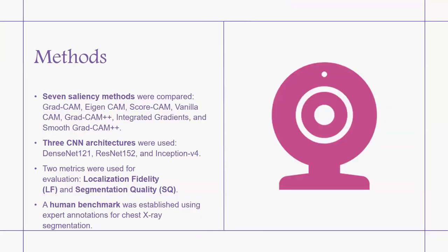The methods used for this study were seven saliency methods, which include Grad-CAM, IGN-CAM, Score-CAM, Vanilla-CAM, Grad-CAM++, Integrated Gradients, and Smooth Grad-CAM++. These methods were evaluated against three commonly used CNN architectures: DenseNet-121, ResNet-152, and Inception version 4, to assess the effectiveness of the saliency methods.